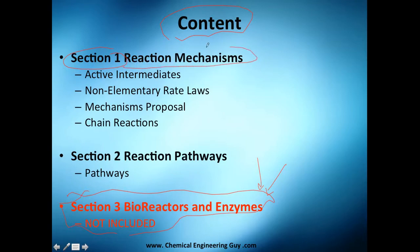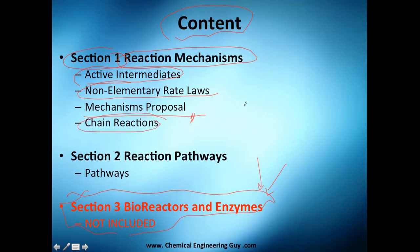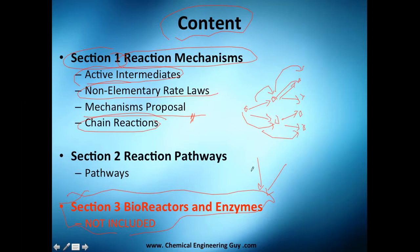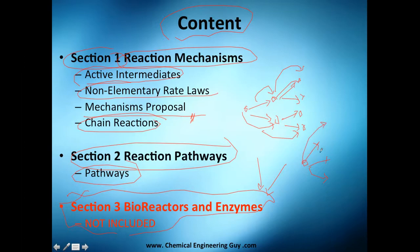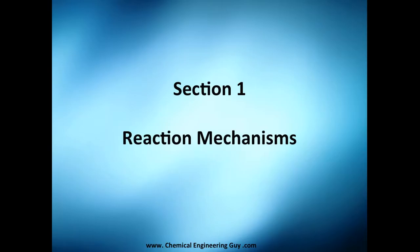Section one is reaction mechanisms: we'll cover what an active intermediate is, how to model non-elementary rate laws, how to propose basic mechanisms, and what a chain reaction is. You may have heard of chain reactions in nuclear chemistry — it's a similar concept where each previous reaction triggers the next. Section two covers reaction pathways: essentially all the different paths a reaction may take. That's the overview of chapter 8.